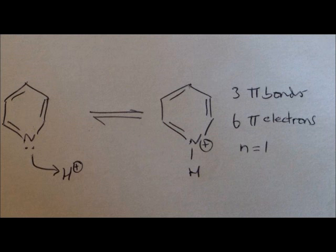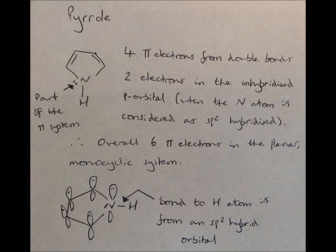Now let's look at pyrrole, a heterocyclic with a 5-membered ring. It has 4 pi electrons from double bonds and 2 electrons in the unhybridised p-orbital. In order for this to be the case, we have to consider the nitrogen atom as being sp2 hybridised. Therefore, this lone pair is part of the pi system. This gives us an overall 6 pi electron system, and this compound is once again planar and monocyclic, therefore can be classified as aromatic.